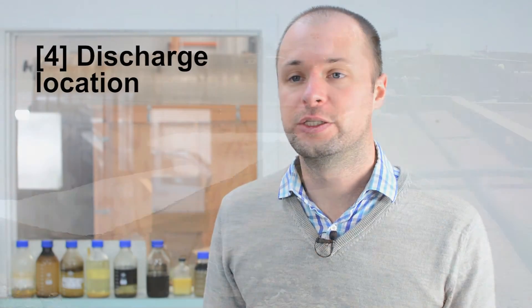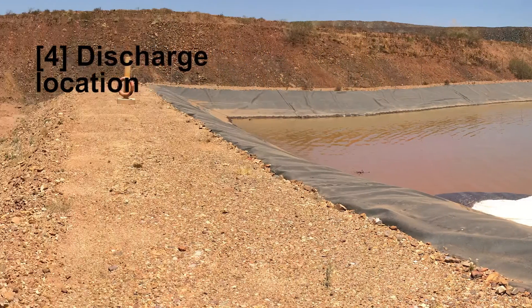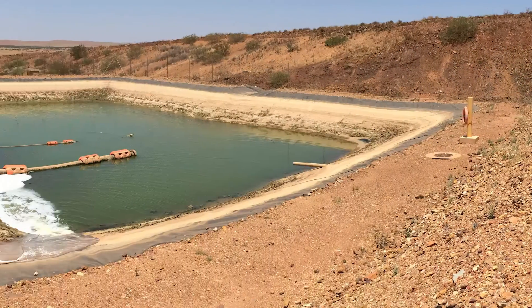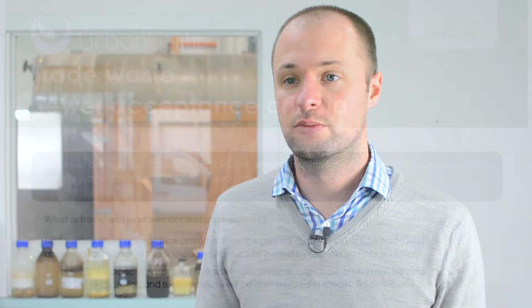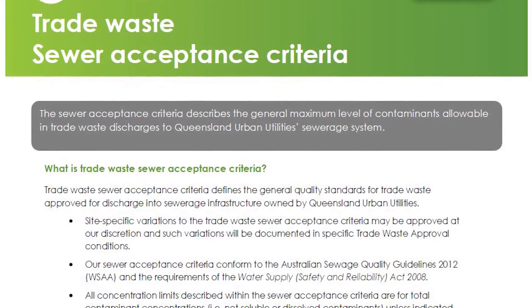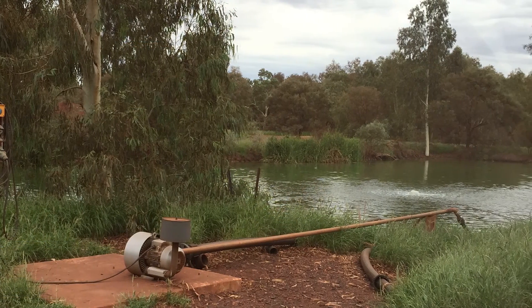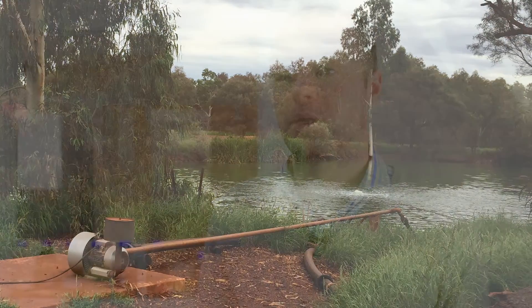Another factor that we consider is the discharge location. The discharge location dictates what quality of water you're going to need to produce from your oily water separator. For example, if you're sending your water straight to the sewer then that requires a lower quality of water to comply with the regulations. But if you're trying to send treated water to a river, straight to the environment, that's going to require a much higher quality of water and therefore a much more powerful separator.